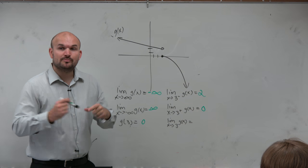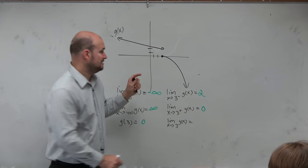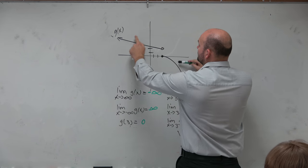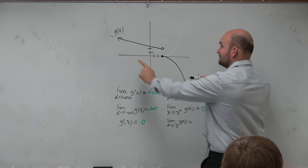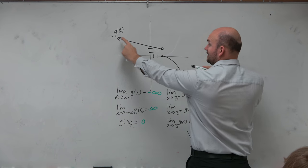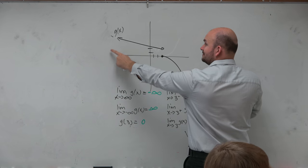And then if you're approaching from the left and the right, the value that we're getting really close to is? Remember, it has to be exactly the same for both of them. The value is? Anybody? OK.